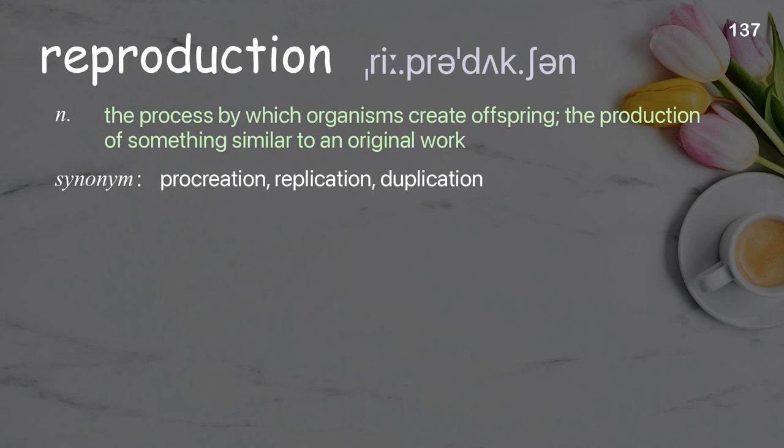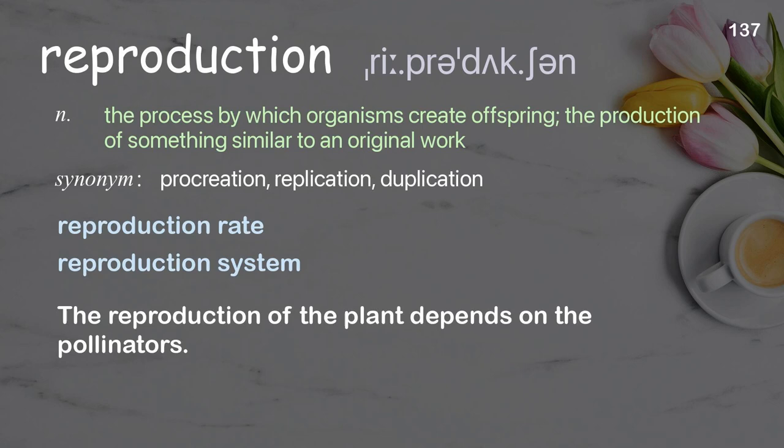Reproduction: the process by which organisms create offspring; the production of something similar to an original work. Examples: reproduction rate, reproduction system. The reproduction of the plant depends on the pollinators.